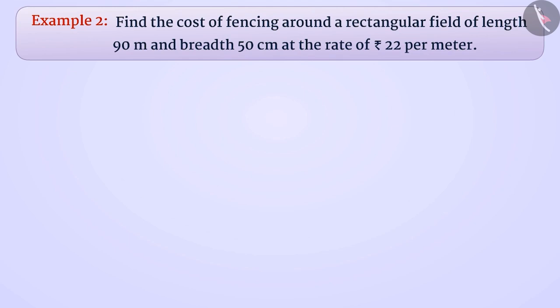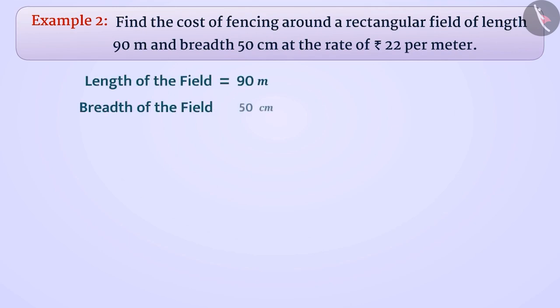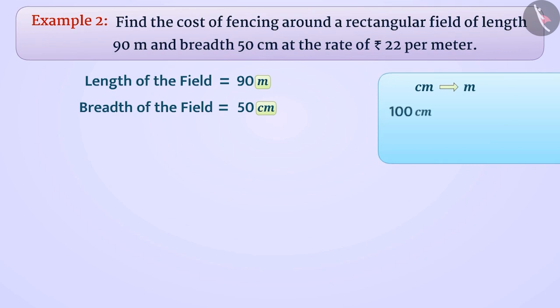We are given that the length of the rectangular field is 90 m and the breadth is 50 cm. Some children do not pay attention to the units of measurement. Here, the length is stated in meters whereas the breadth is stated in centimeters, so we need to make the units the same by converting centimeters to meters.